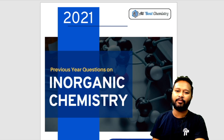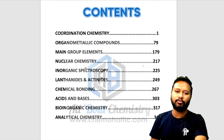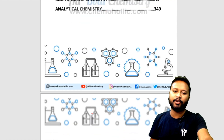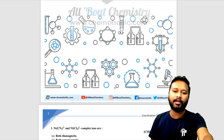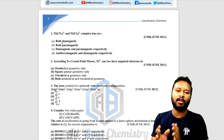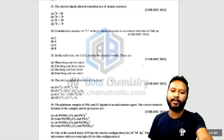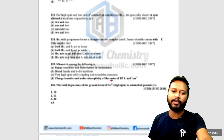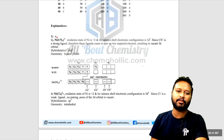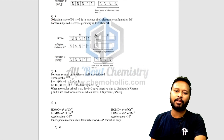Coming to the inorganic chemistry file — the contents include Coordination Chemistry, Organometallic, Main Group Elements, Nuclear Chemistry, Inorganic Spectroscopy, Lanthanides and Actinides, Chemical Bonding, Acid and Base, Bio-Inorganic Chemistry, and Analytical Chemistry. In the inorganic format, questions and answers are not presented one after the other. You will first get all the questions listed, with numbers against them, and then further down you get all the answers with detailed explanations — for example, the answer to question one is option C, with the explanation provided.